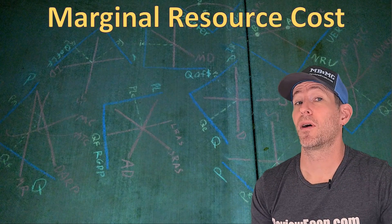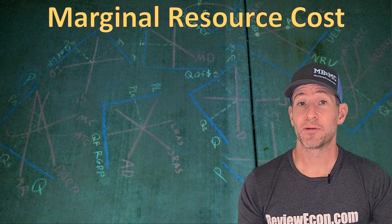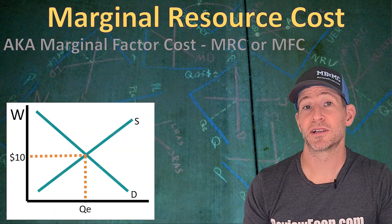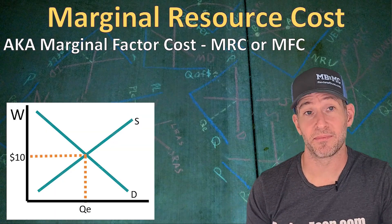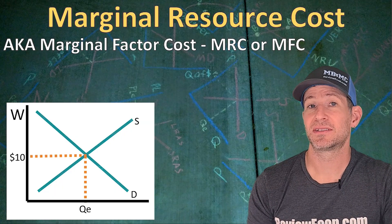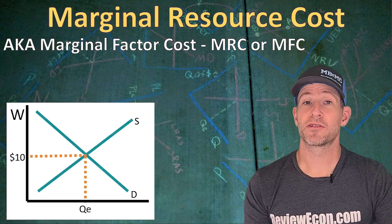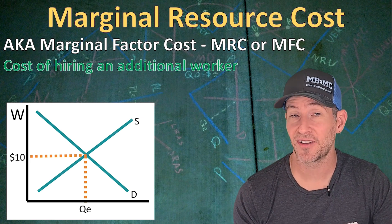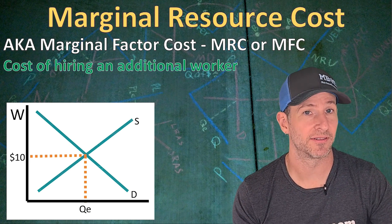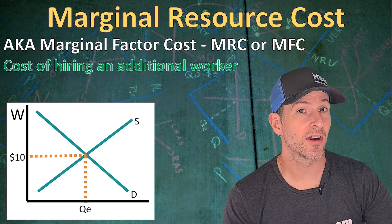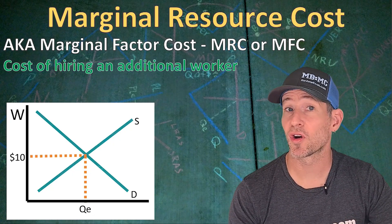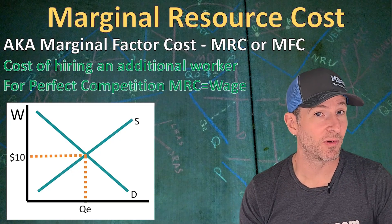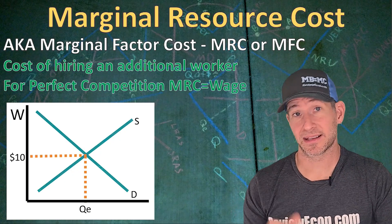Next, we're going to talk about the marginal resource cost for the firm. Here we have the market for labor with an equilibrium wage of $10. The marginal resource cost is also known as the marginal factor cost — you could see MRC or MFC on your exam. Whether you see marginal resource cost or marginal factor cost, it is the cost of hiring an additional unit of labor. Since firms in a perfectly competitive factor market pay the equilibrium wage for all workers they hire, the marginal resource cost is going to be equal to the wage — in this case, $10.